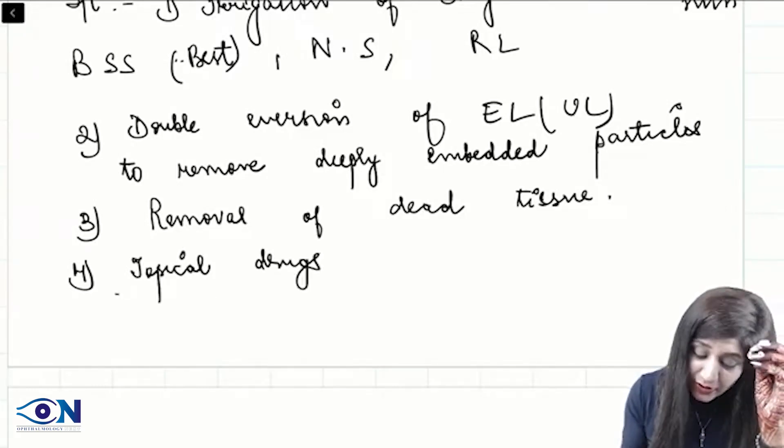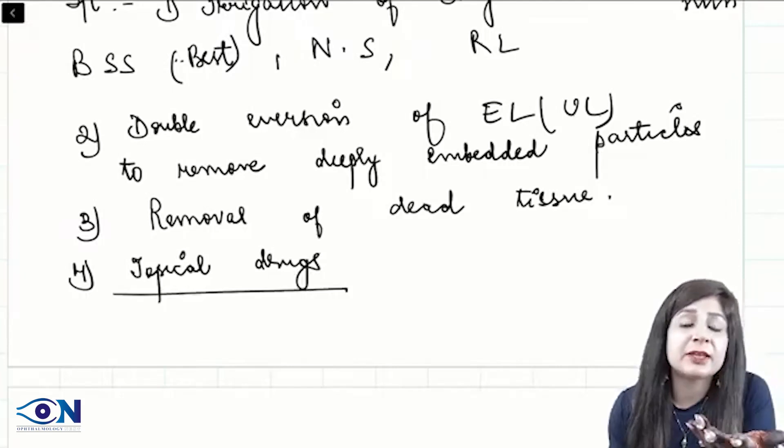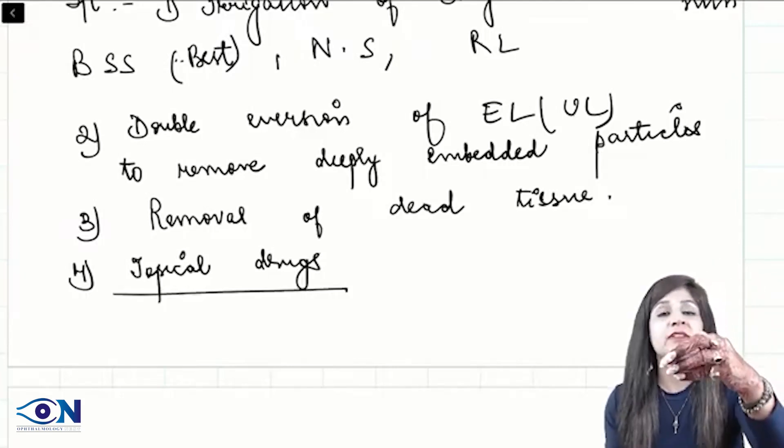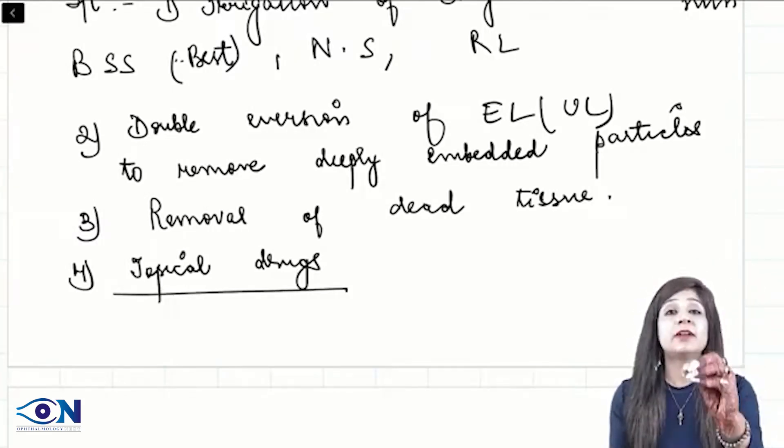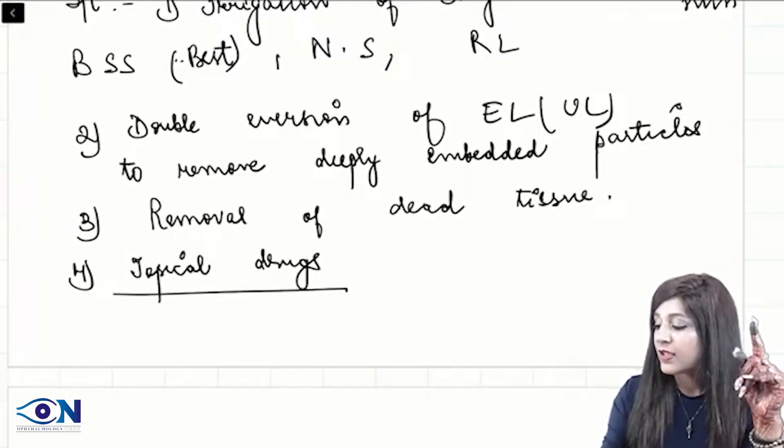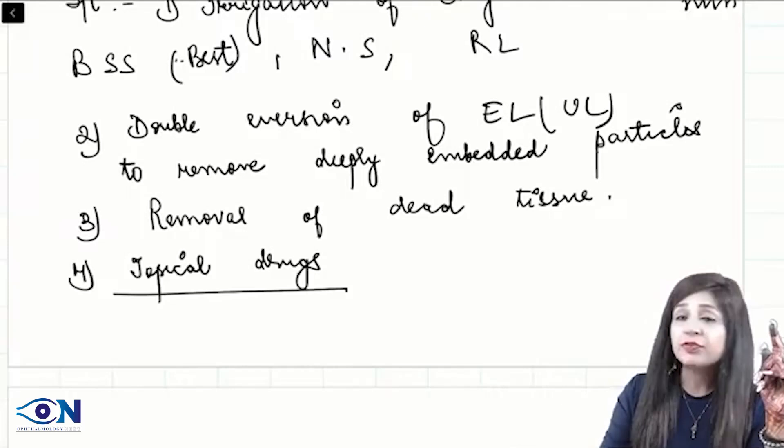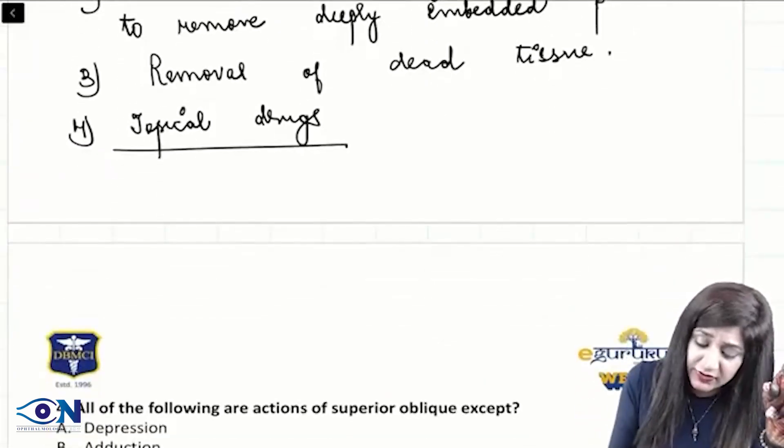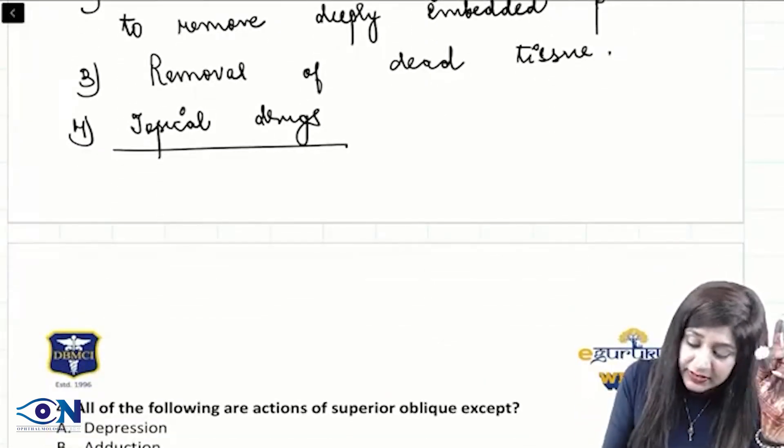Why we are using the drugs after debridement? Because when you are putting the drugs, it will not be able to act over the dead tissue. First you have to do debridement and only then we have to give the drugs. Which drugs we have to give?